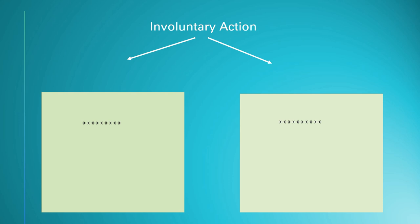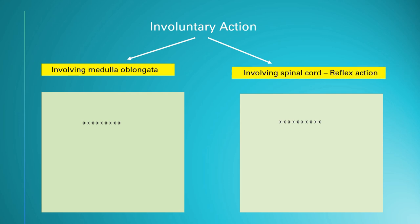There are two types of involuntary action because there are two centers which control them. The first group involves the medulla oblongata — certain involuntary actions are controlled by the medulla oblongata at the base of the brain. The other type is a special type called reflex action, which involves the spinal cord. Let's look at the similarities between these two types.